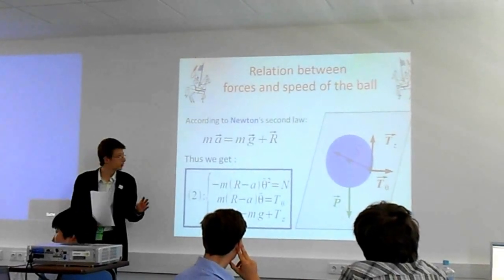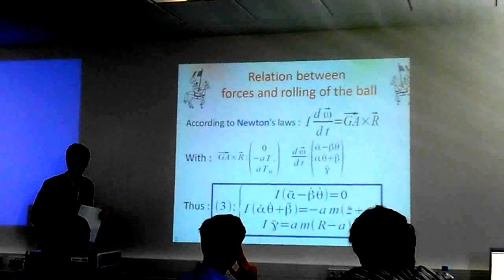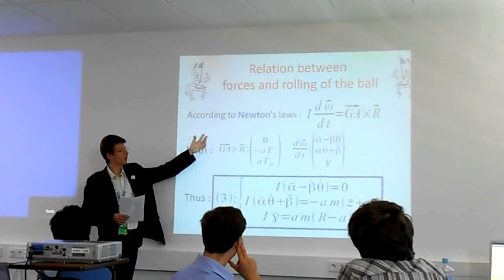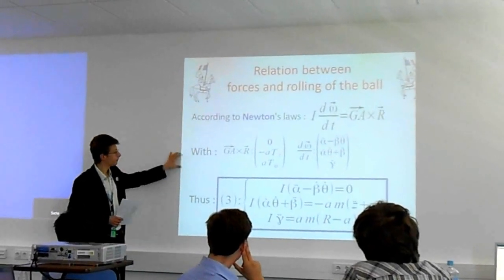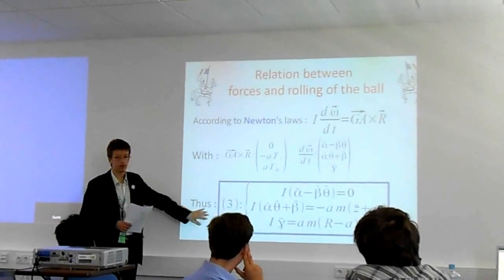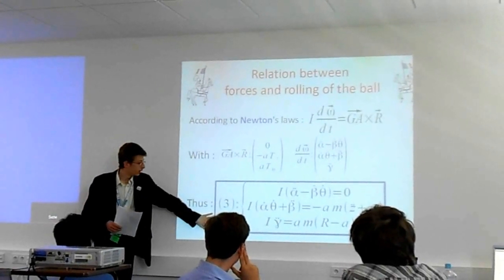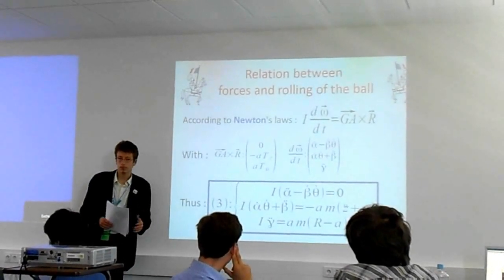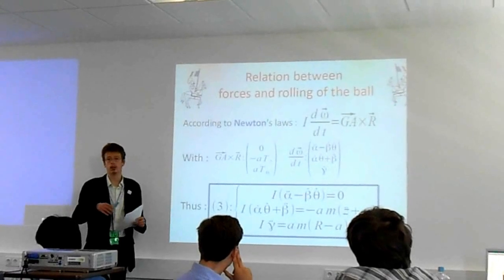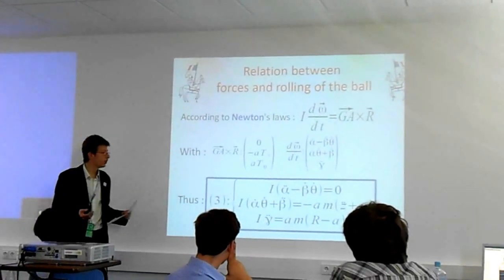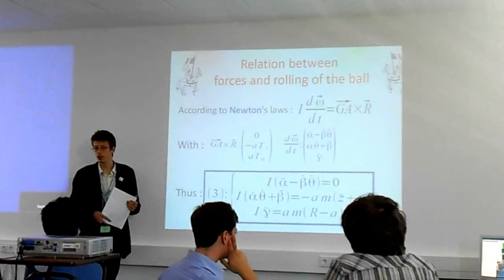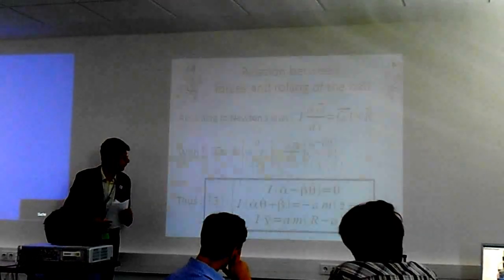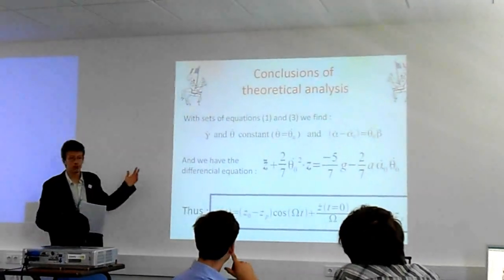Finally, we're going to relate the rolling with the forces. To do so, we use this theorem up there. After calculations with this, we get set of equations number three. Consequently, with all these sets of equations, we're going to be able to get out the motion of the ball according to the z-axis, which is the one interesting us as the z-axis is the height of the ball.